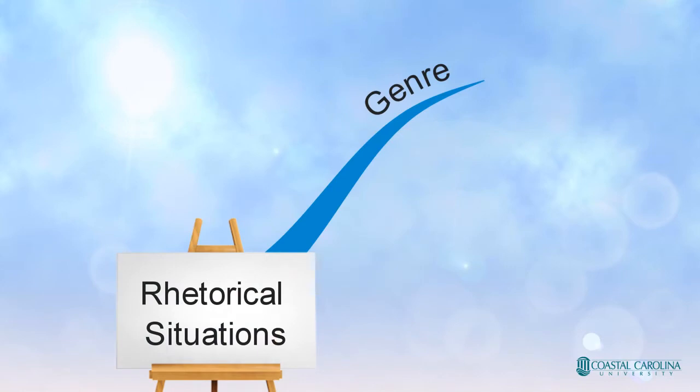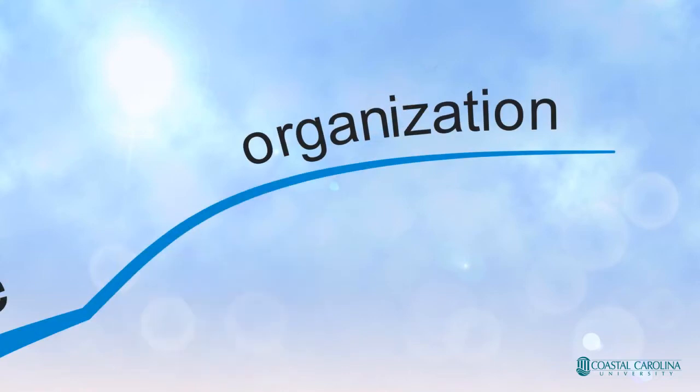So the first part of the rhetorical situation is the genre. Genres are types or categories of things. The way a genus covers a number of species, a genre is a type of writing. So in a typical freshman English class, a narrative or a proposal or an opinion piece, all of these would be examples of genres. So when you start a paper, you want to ask yourself what's the genre? What's the type that I'm writing in?